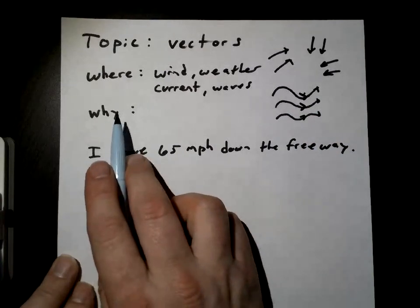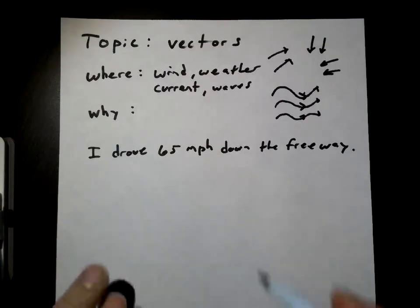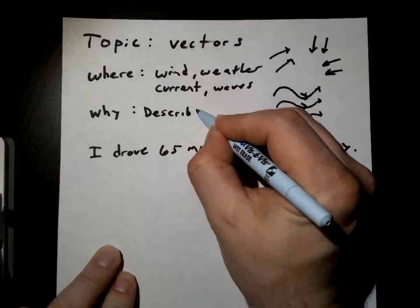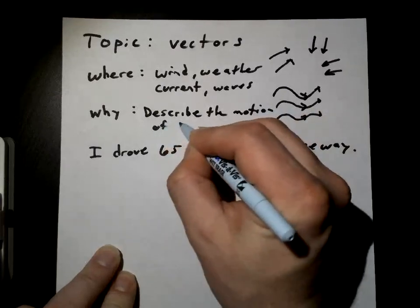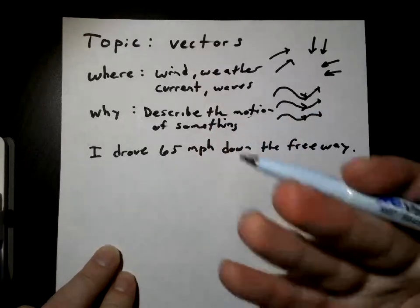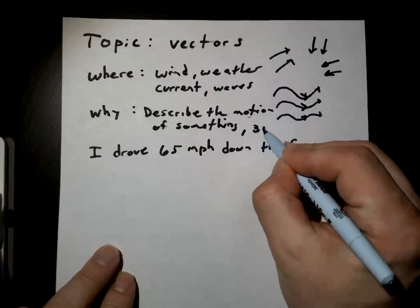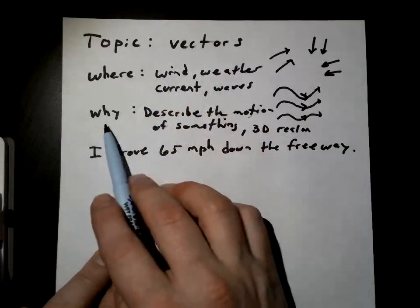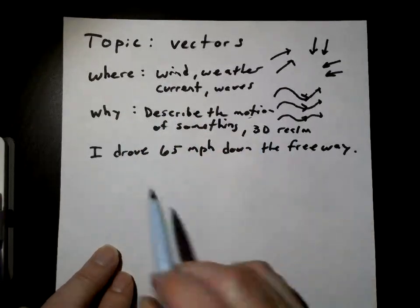The reason we look at vectors is because we want to describe the motion of something. Motion is like the force or energy. Maybe we want to see it in a 3D realm — where does this wave or vector work in the three-dimensional realm of things?